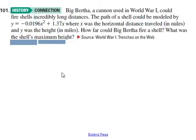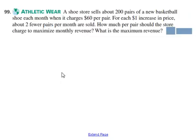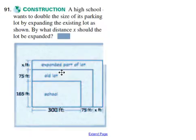We talked about the problem of Big Bertha, a cannon. Then the shoe store problem, trying to make maximum revenue. And then very quickly, we talked about the high school parking lot question. Each of these five I'm going to go through, though some more quickly than others because some got more time in class. If you want to fast forward to a particular word problem, I've separated all of them by a green screen, so hopefully you can fast forward and find the one you want. Let's get started with the first word problem.